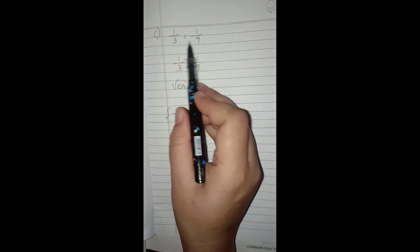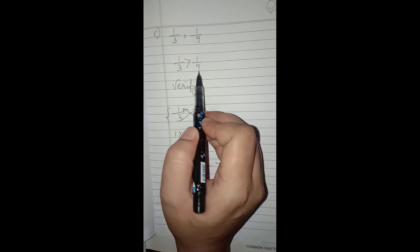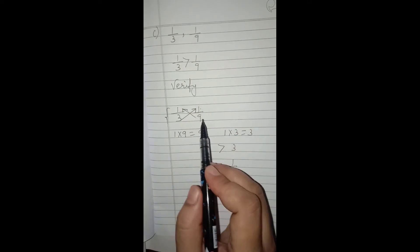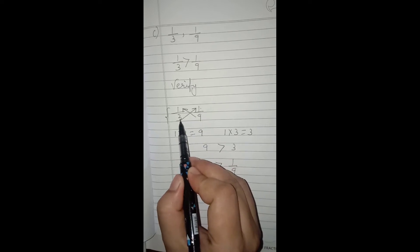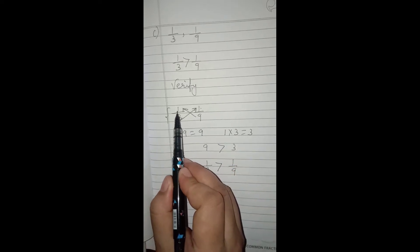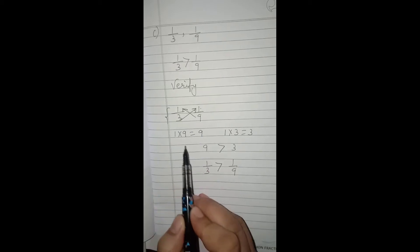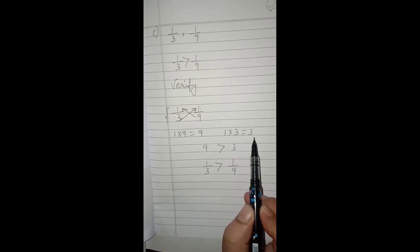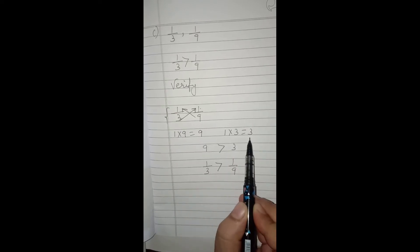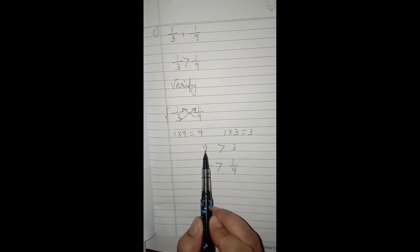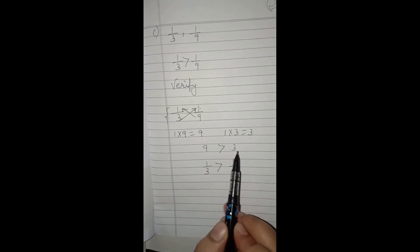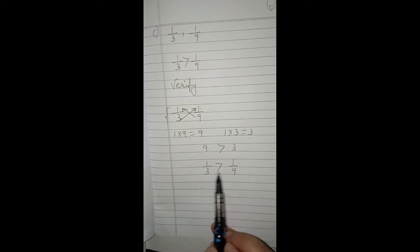Part c is 1/3 and 1/9. By just looking, 1/3 is greater than 1/9 because the unit fraction with the smaller denominator is always greater. We verify by cross multiplication: one into nine equals nine, and one into three equals three. Nine is greater than three, and nine came from 1/3, so 1/3 is greater. Three is smaller and came from 1/9, so 1/9 is smaller. Hence it is proved that 1/3 is greater than 1/9.